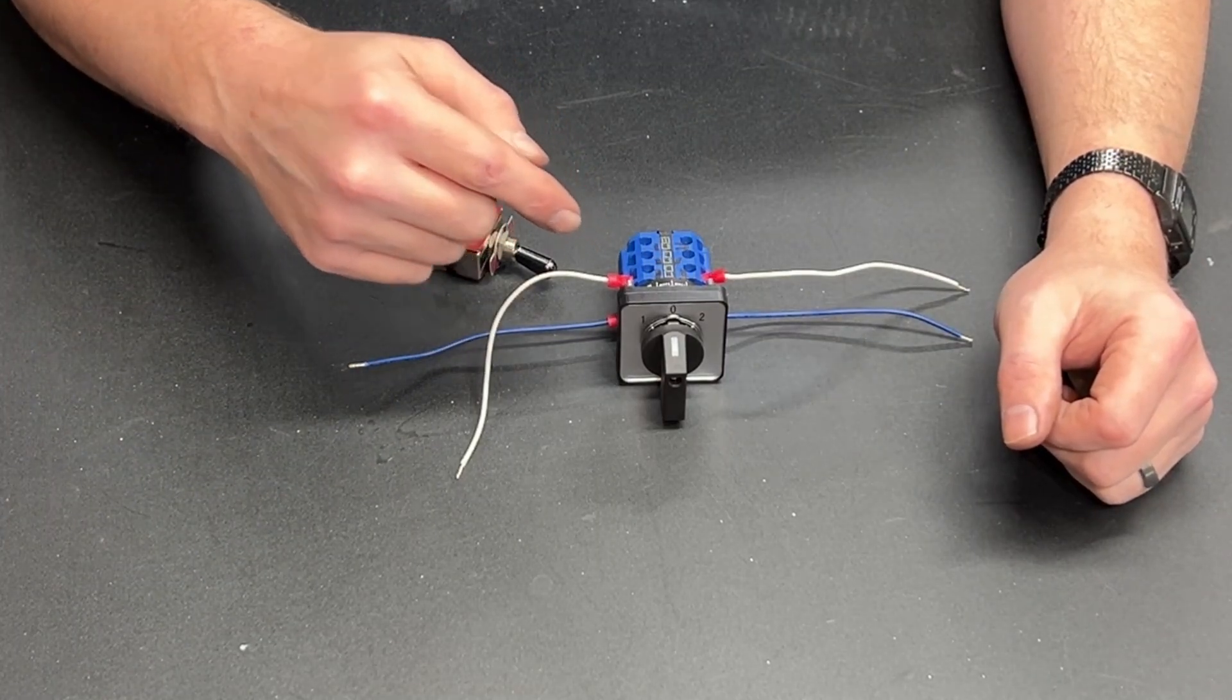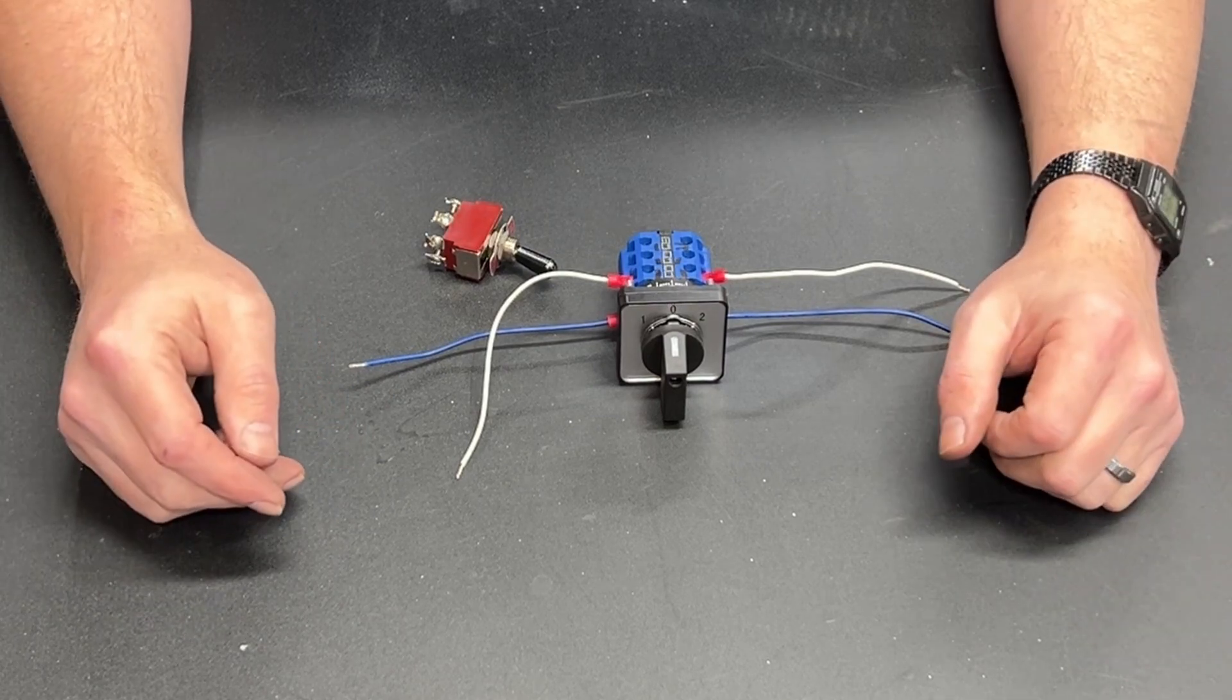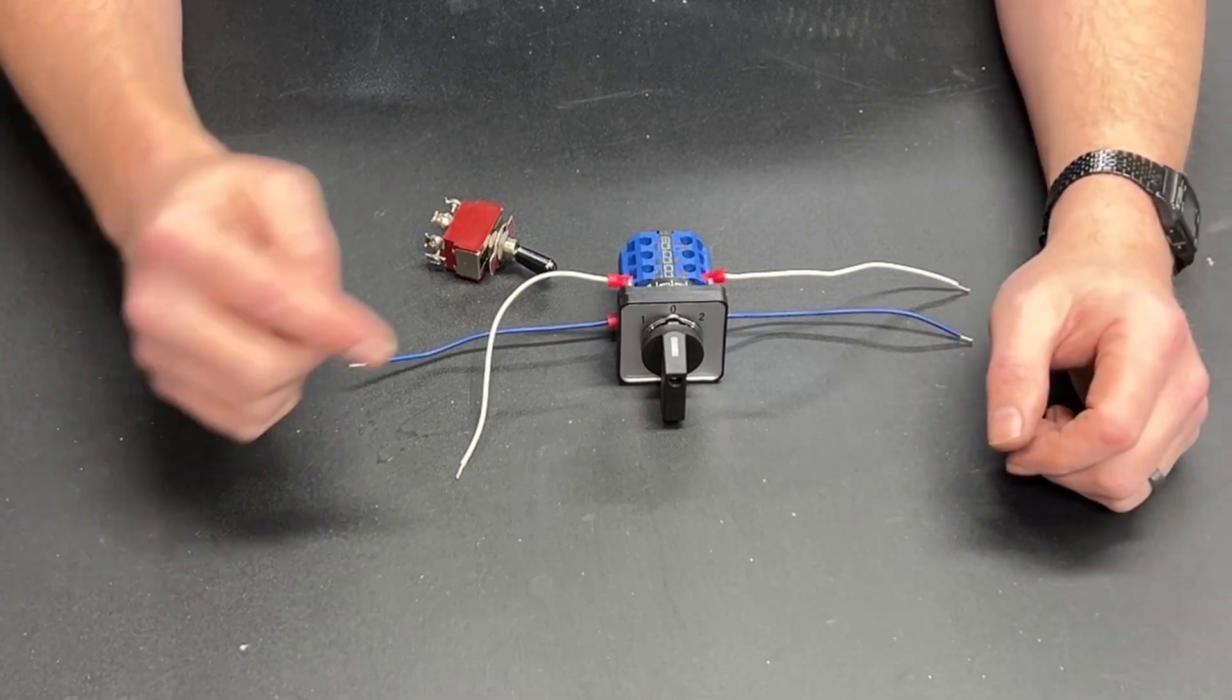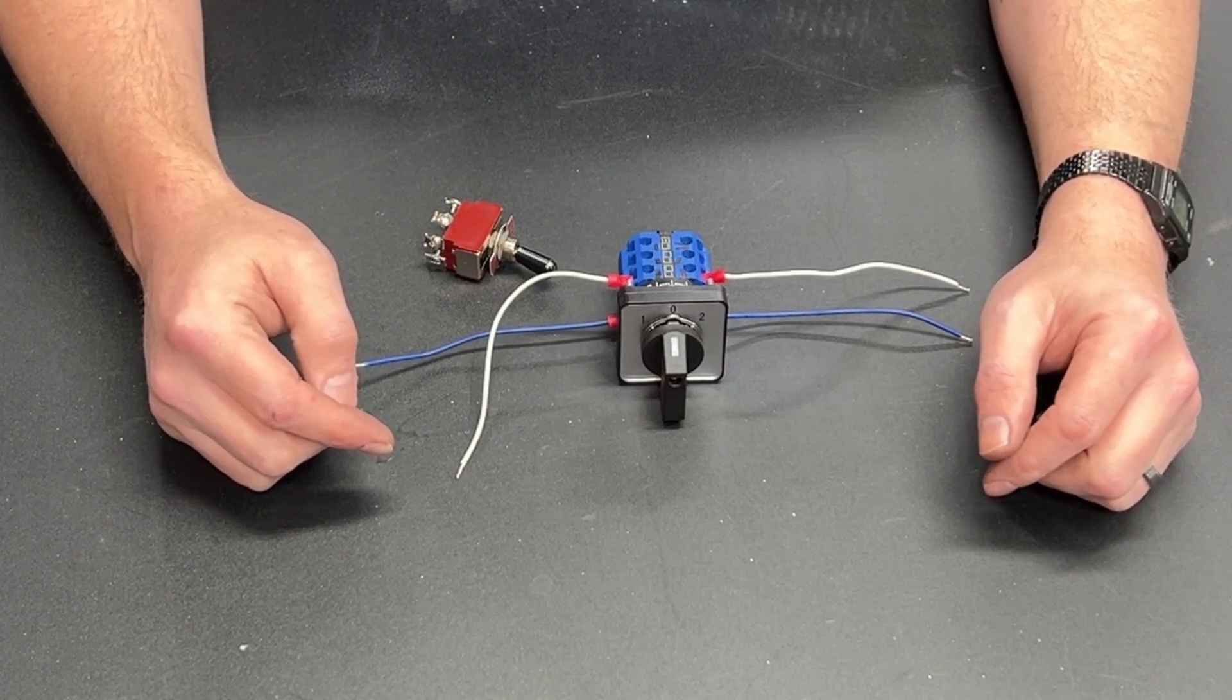I wish it was easy to find a rotary switch that was a double throw switch. If we can't find one, maybe we'll just take this one that's not a double throw switch and wire it to be a double throw switch.